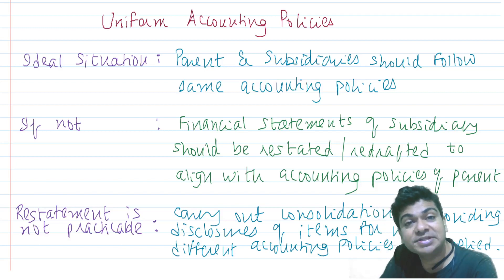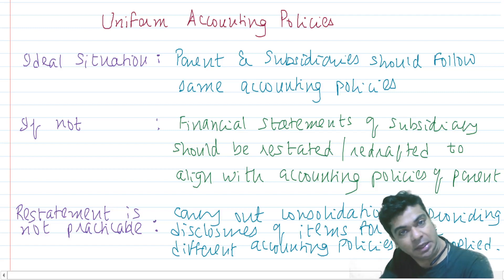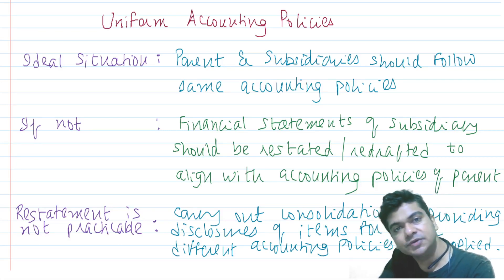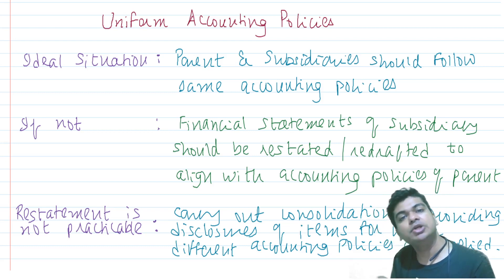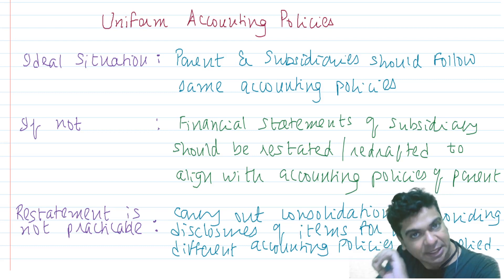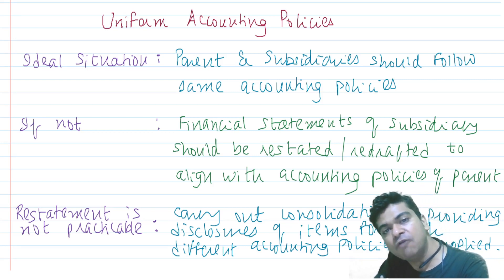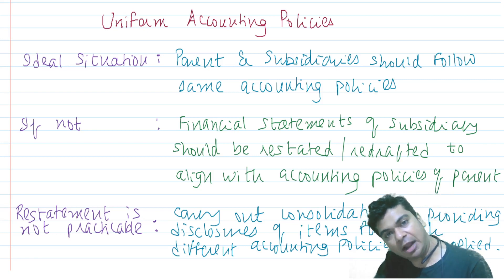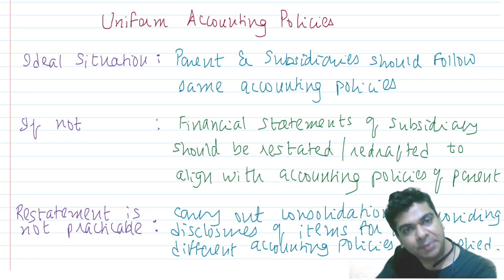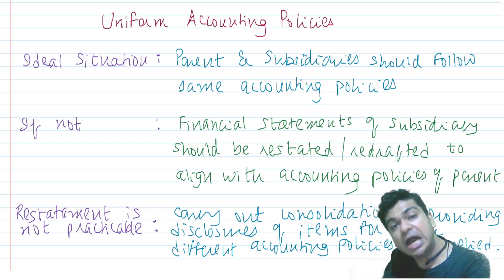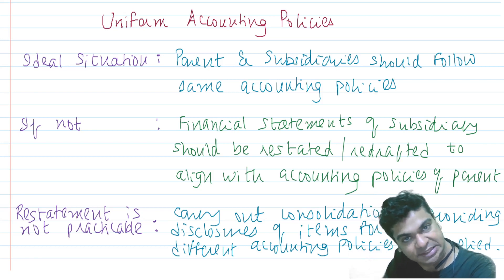Let's discuss two miscellaneous requirements of Accounting Standard 21. The first is with respect to uniform accounting policies. AS-21 is of the view that the ideal situation is that the parent and the subsidiary are all following the same accounting policies. If you are acquiring control over some company and that company becomes your subsidiary, we should ensure that the subsidiary now starts following the same accounting policies as the parent.